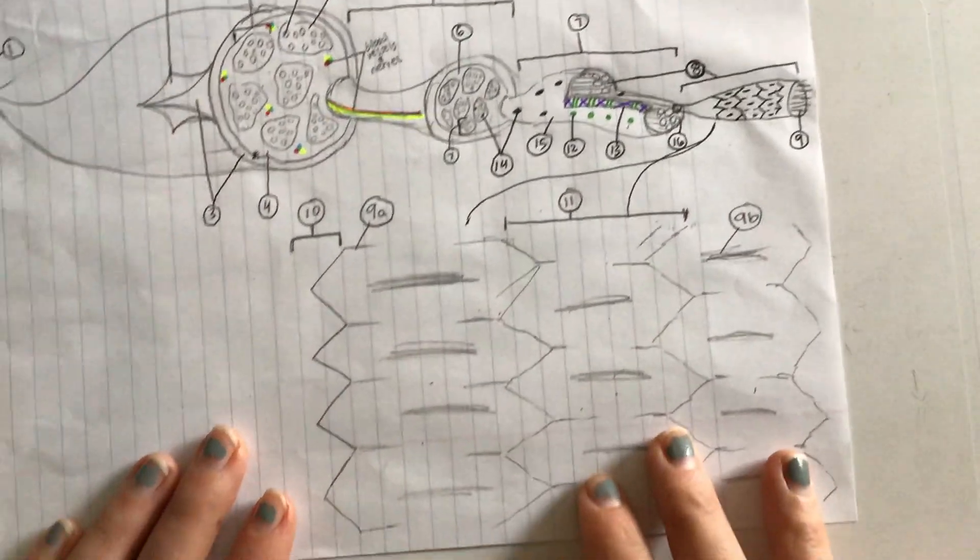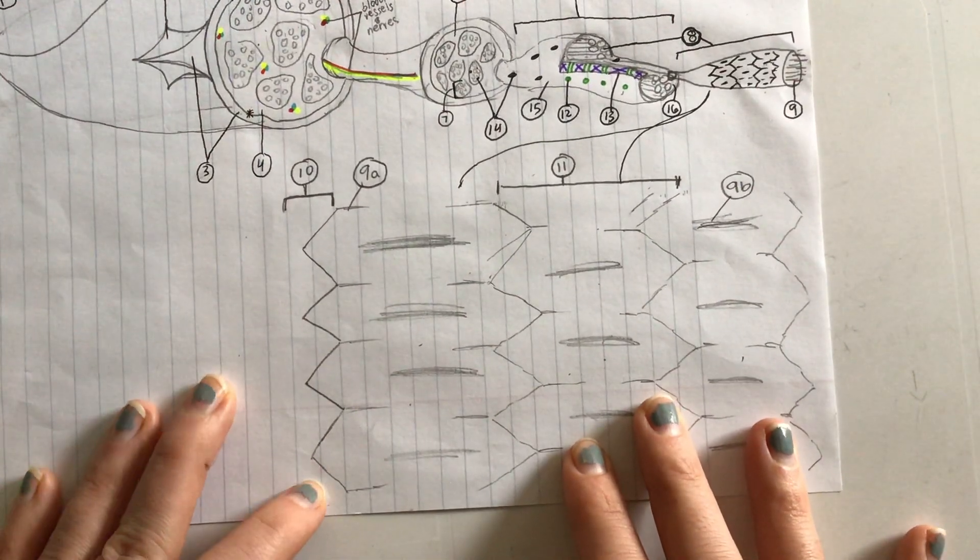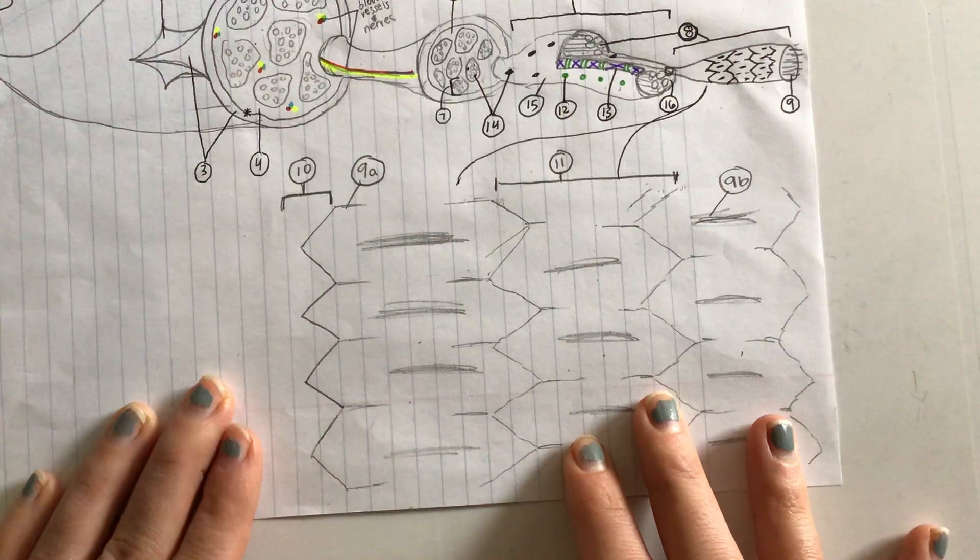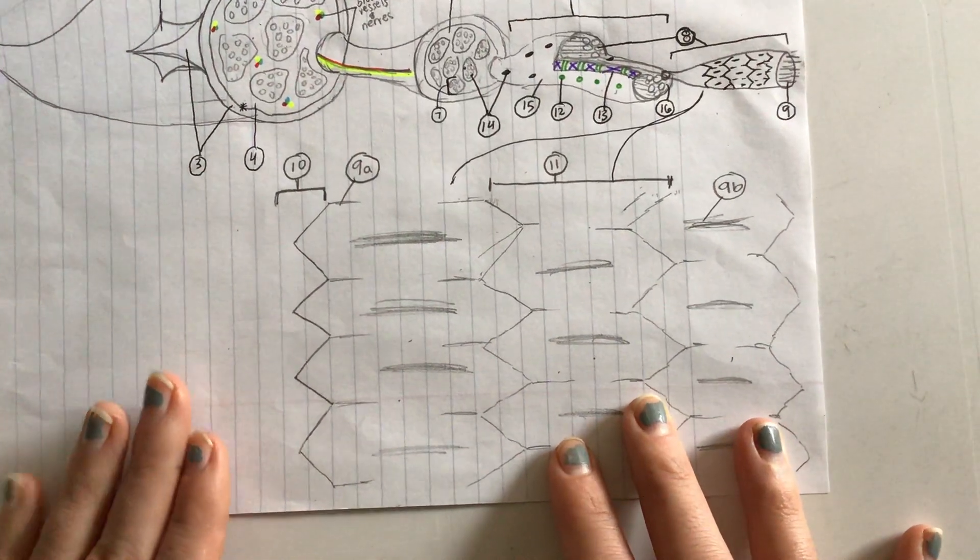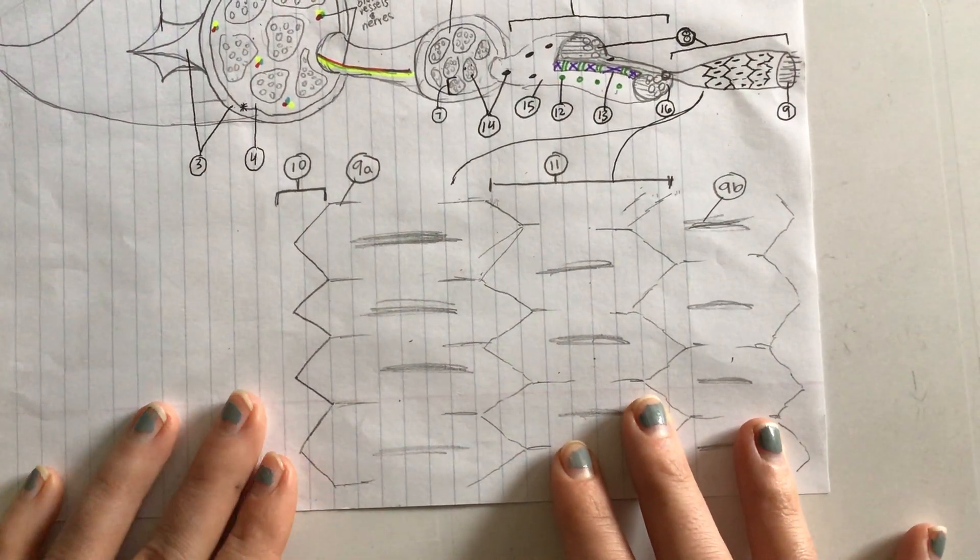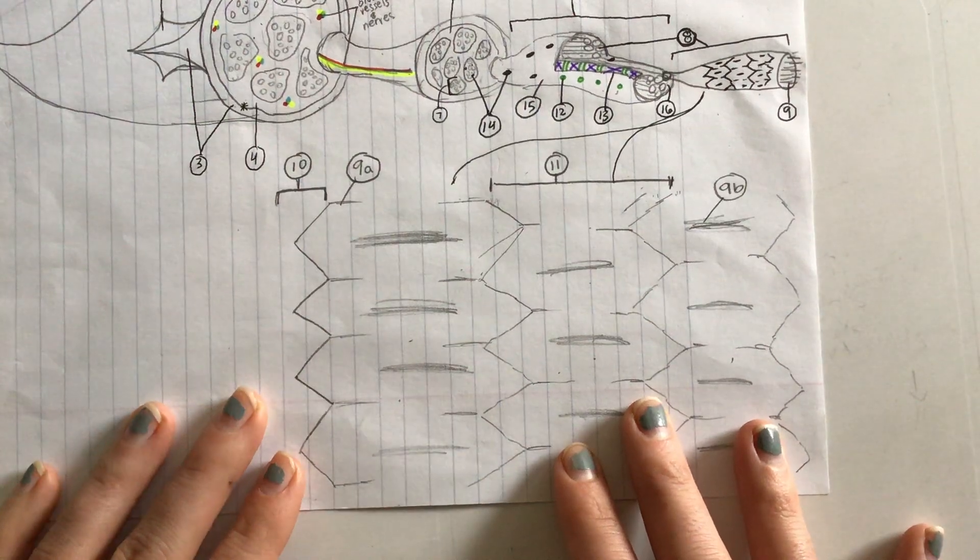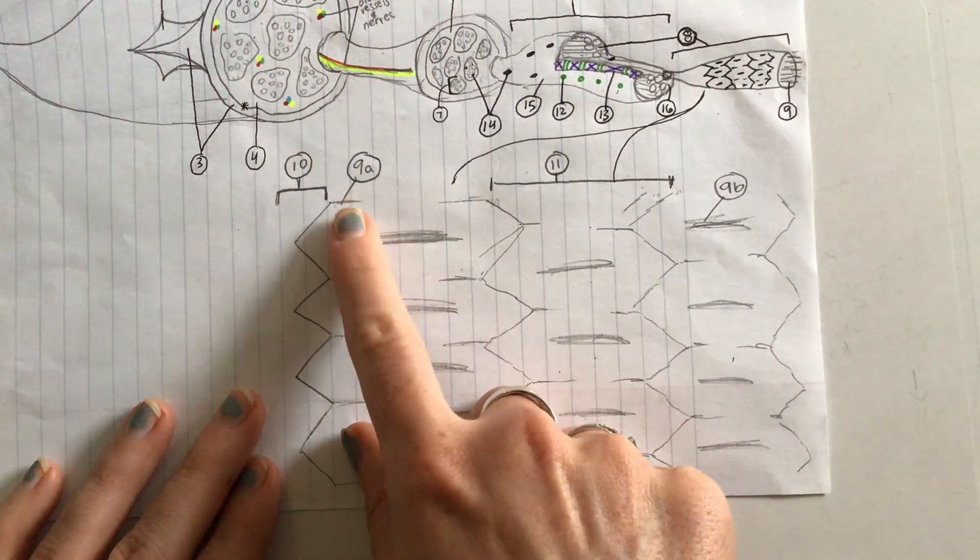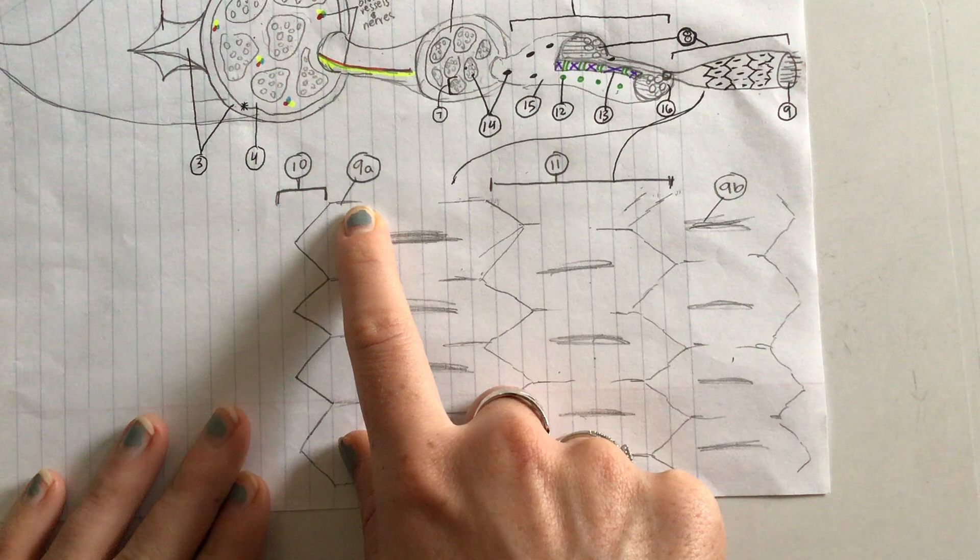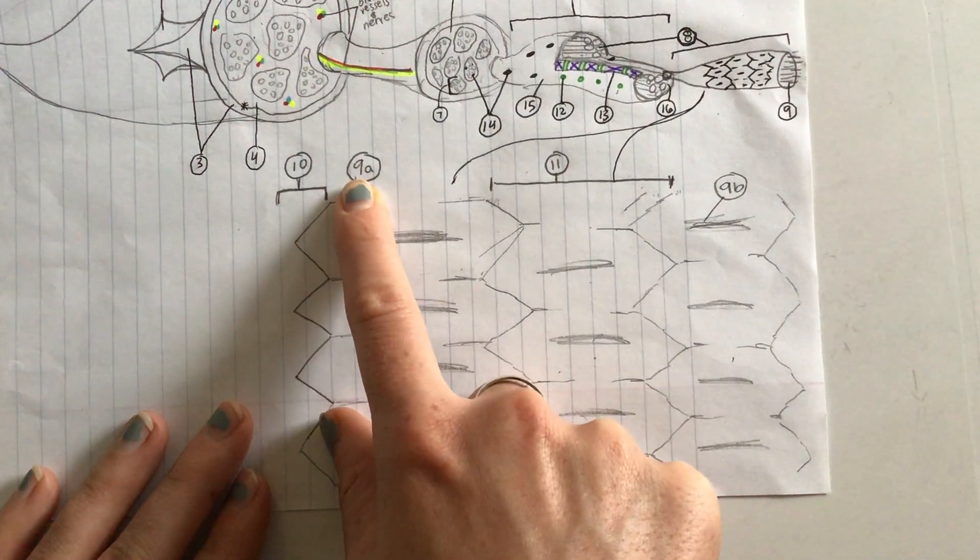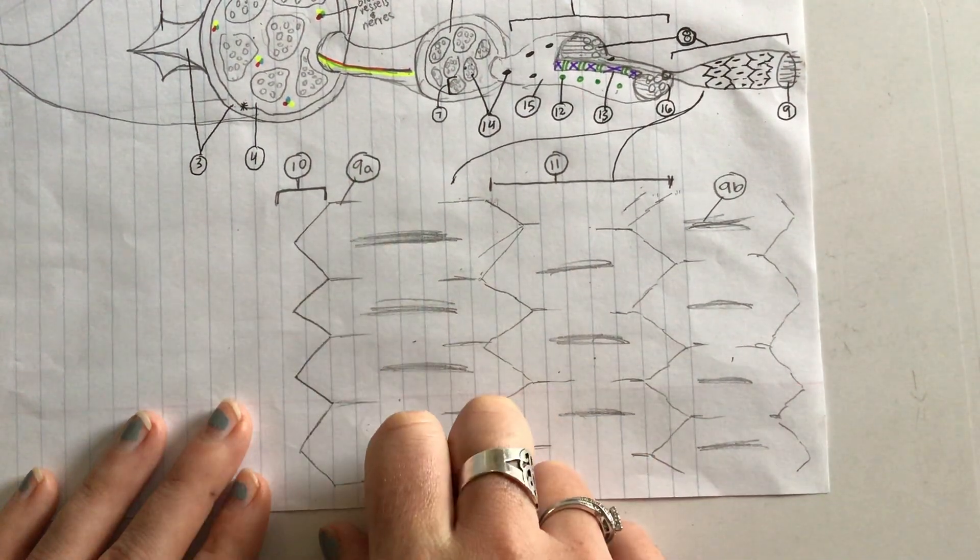Okay, so here we are way zoomed in on muscle. We have some proteins shown here that make up our contracting units of muscles. Here labeled by 9a we have a thin protein filament. What is 9a? It is actin.